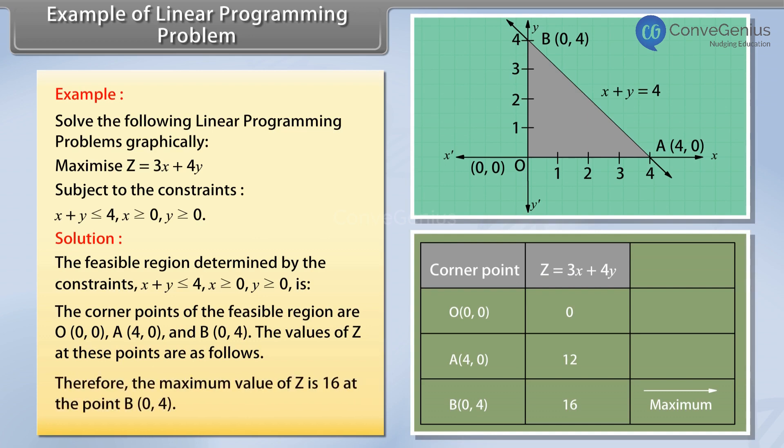Therefore, the maximum value of Z is 16 at the point B(0, 4).